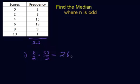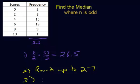See how we have that 0.5 again? Step two is to round that up — always round up — to 27. So the median is the 27th number.